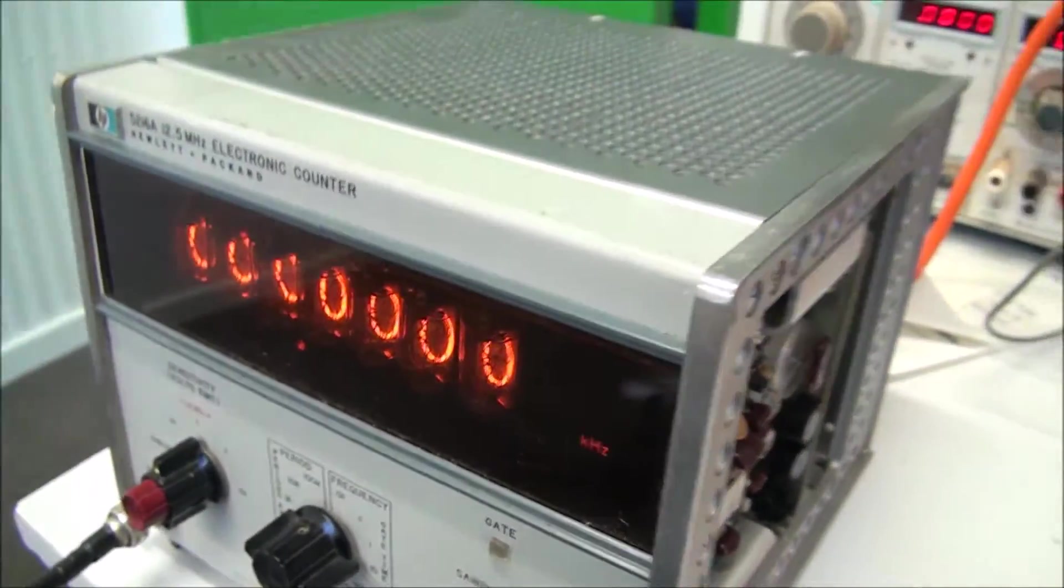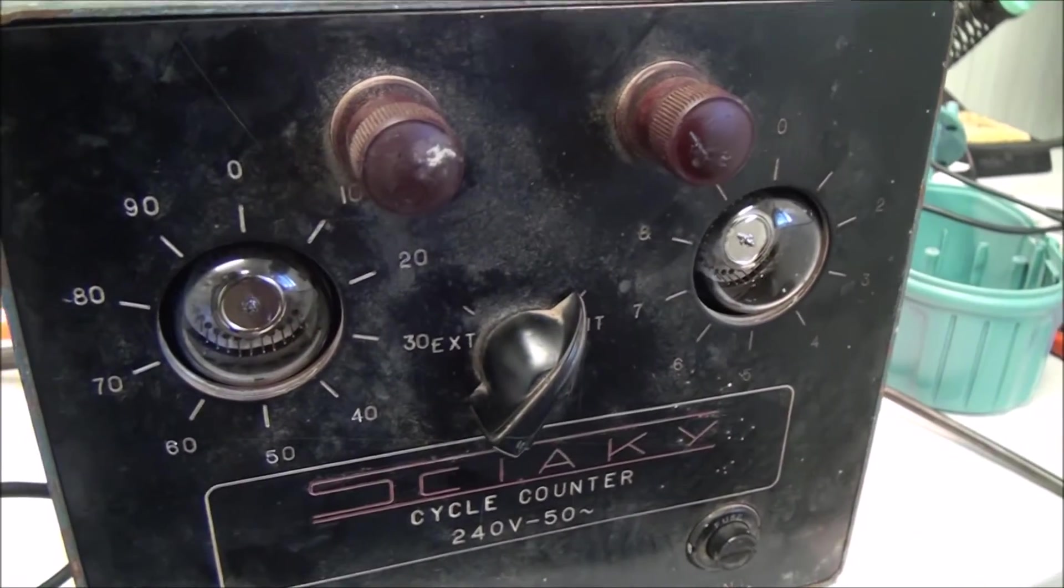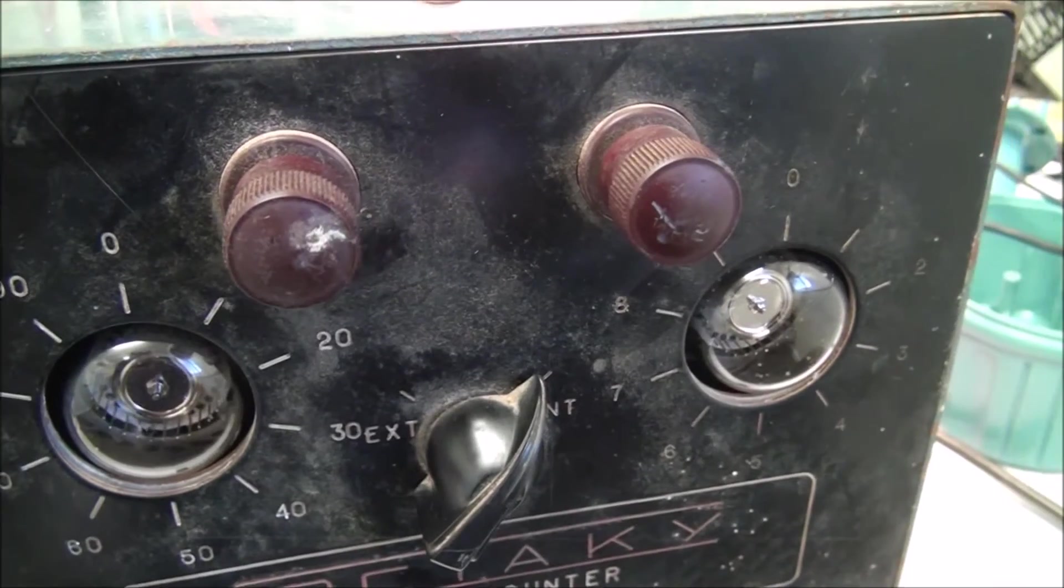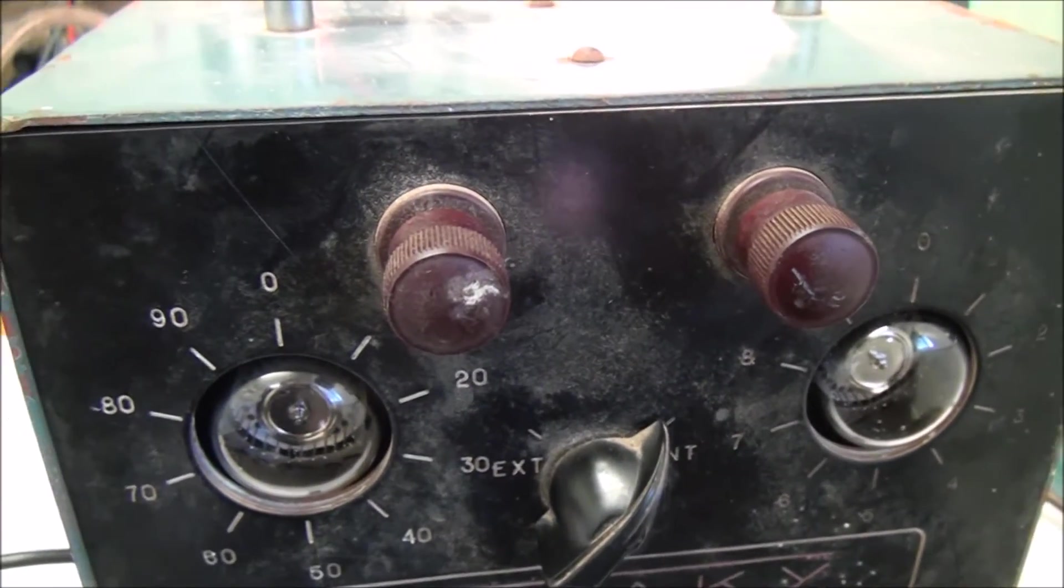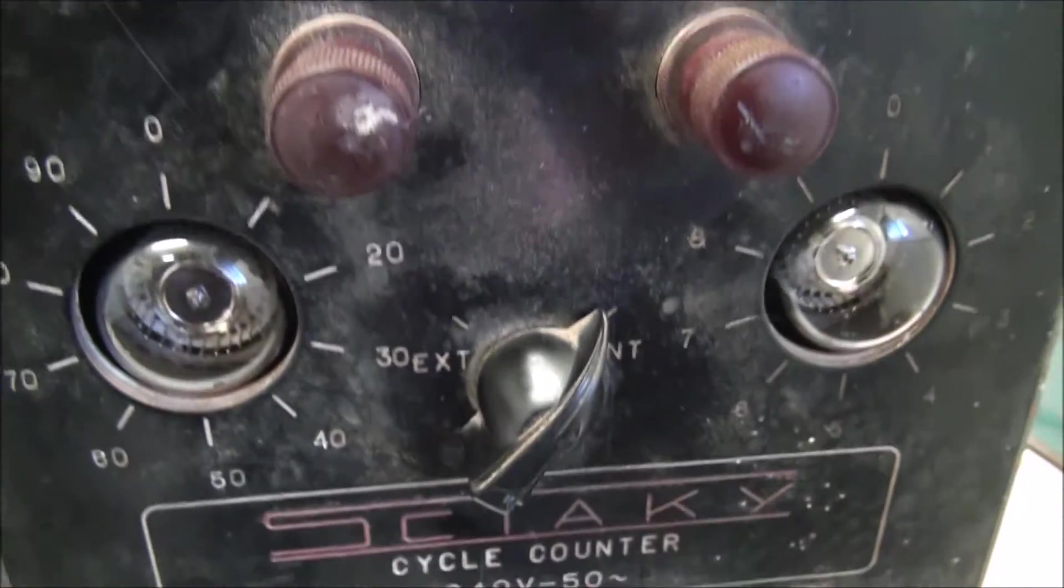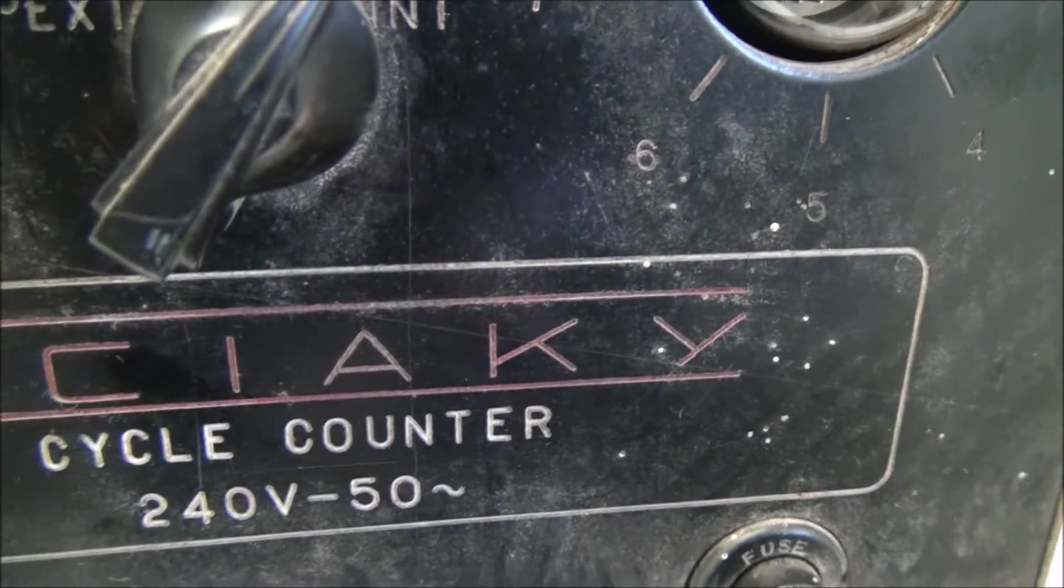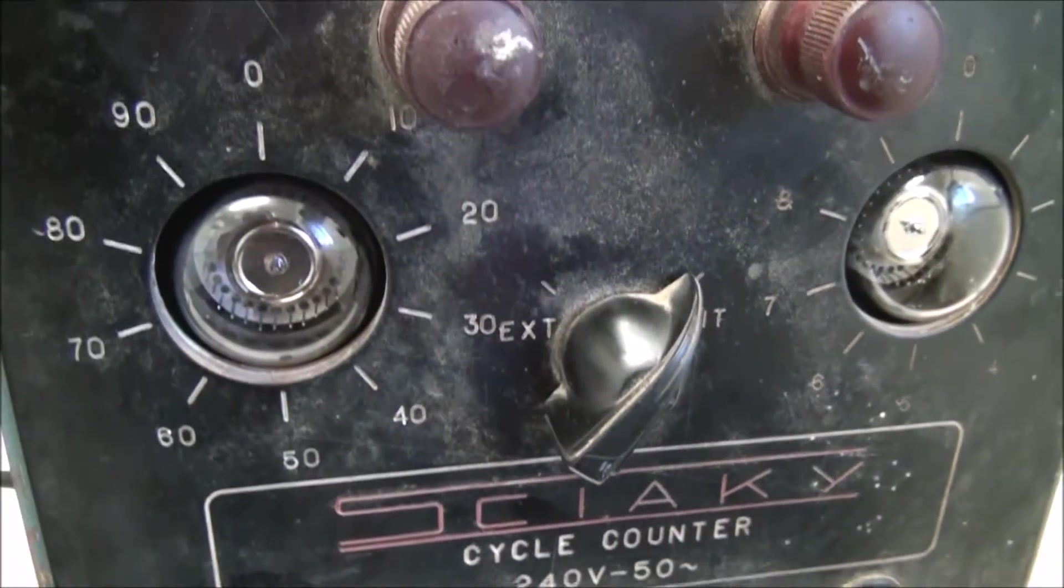And the other instrument I got is a Decatron cycle counter. I think this would have been probably from the 1950s. I don't know who it's made by, but I think it could be Australian made. We'll have a look at that one too in a minute.